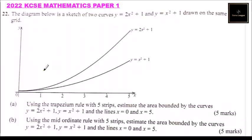Question number 22, 2022 KCSE Mathematics Paper 1. We are told the diagram below is a sketch of two curves, y equals 2x squared plus 1 and y equals x squared plus 1, drawn on the same grid.